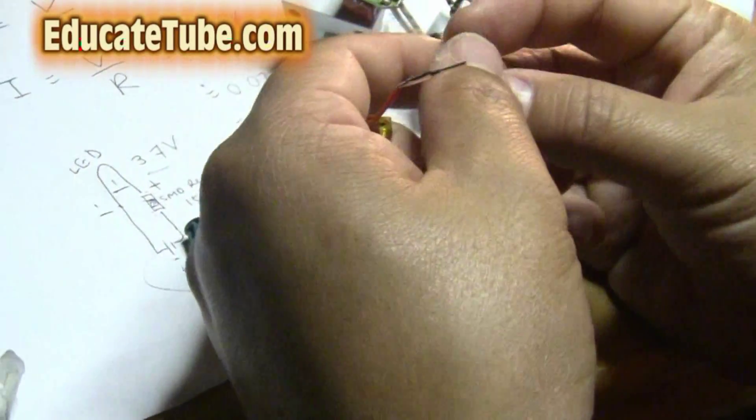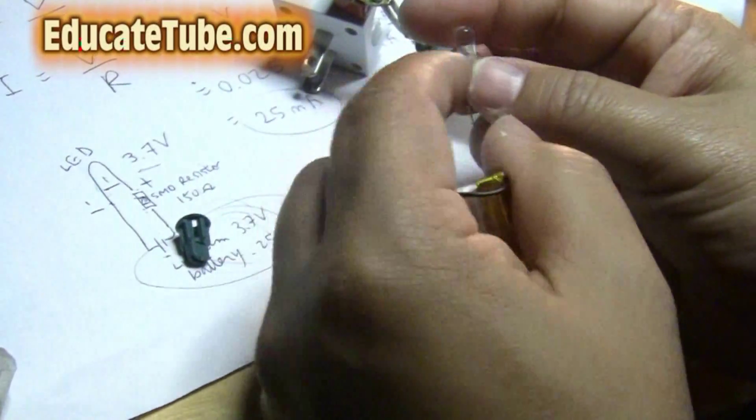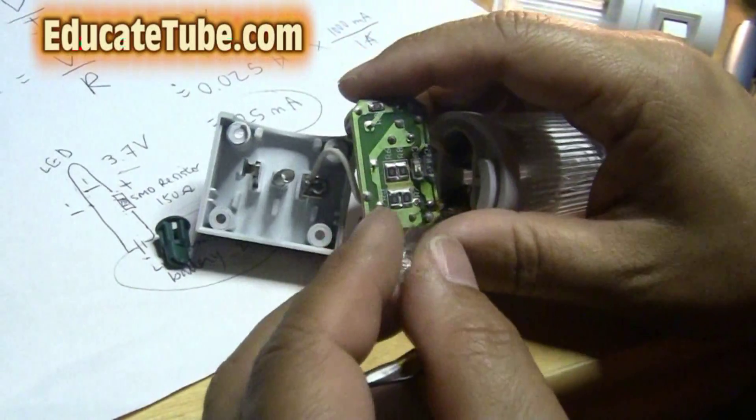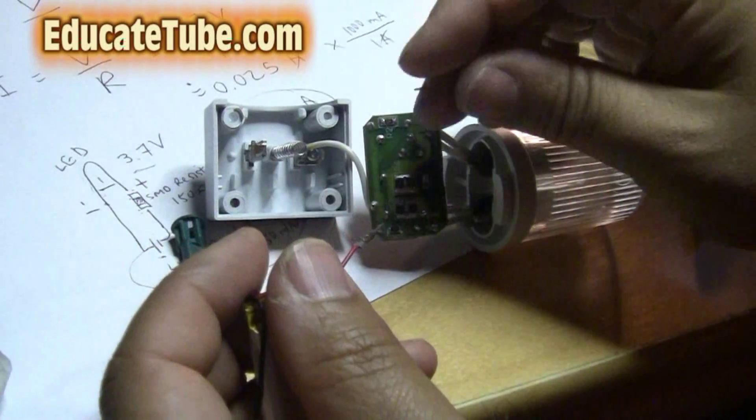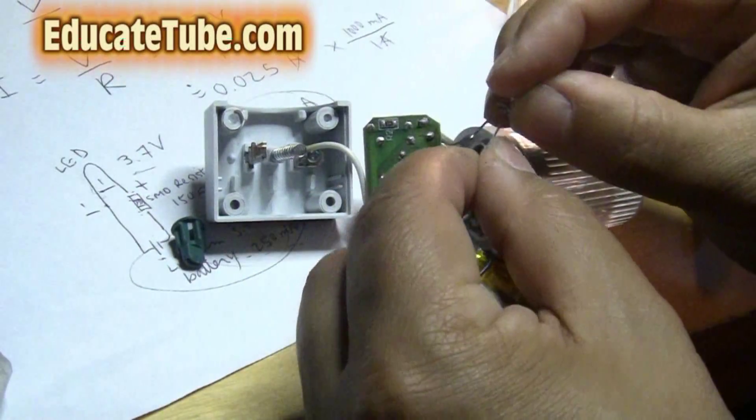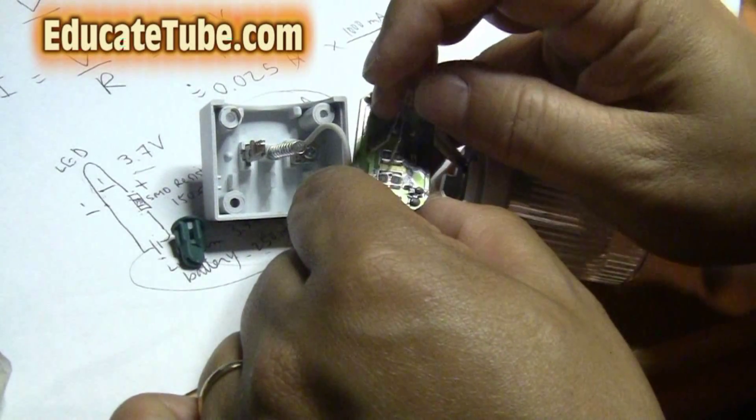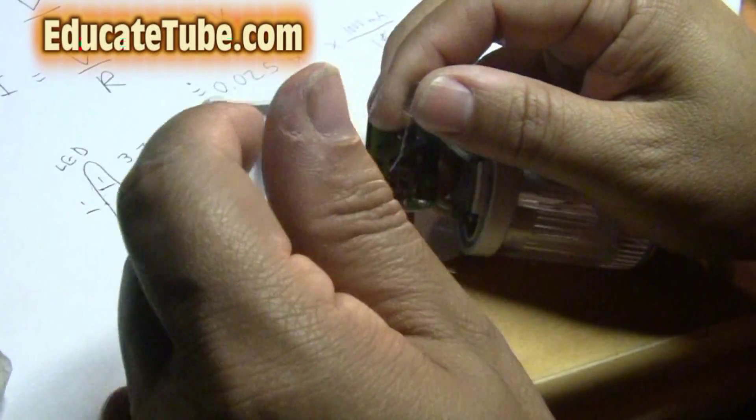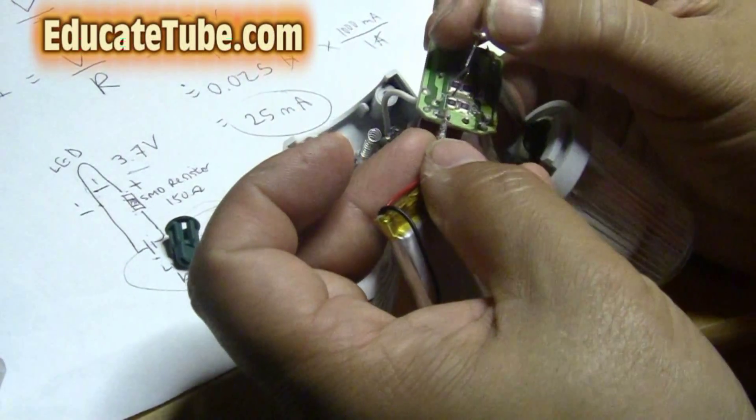Now we don't want to directly hook it up to your lithium battery. It will be so bright and it will actually shorten the life of this LED light. What you want of course is to take one of these resistors and then you want to connect it directly to that. So what you want to do is put the positive terminal onto the resistance.